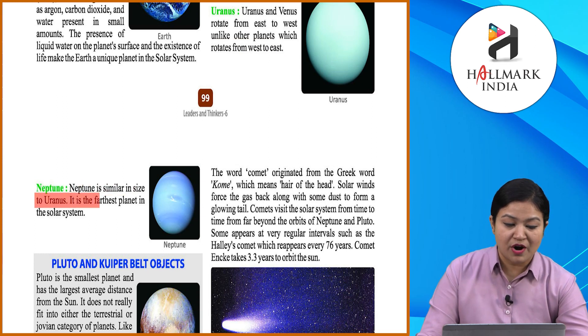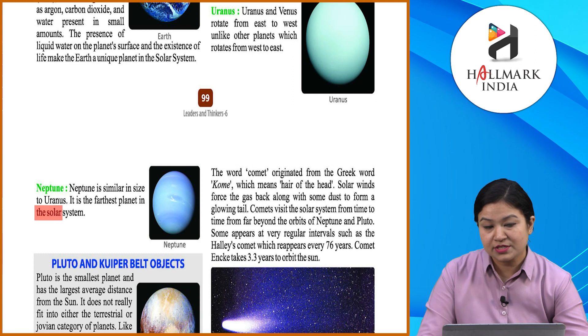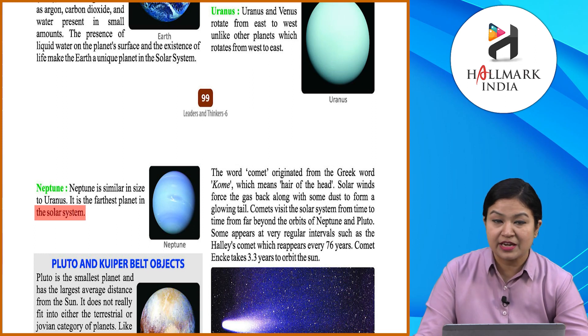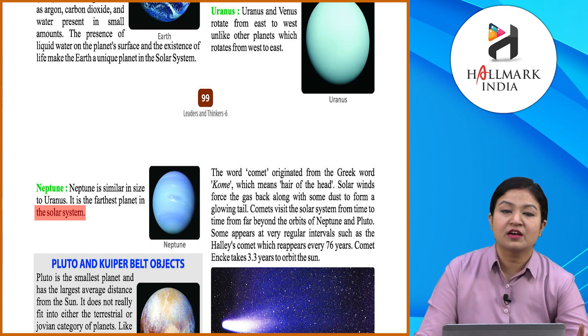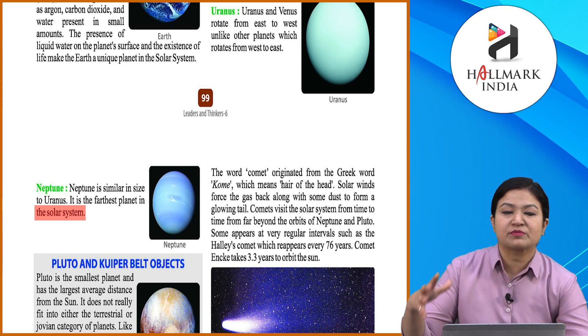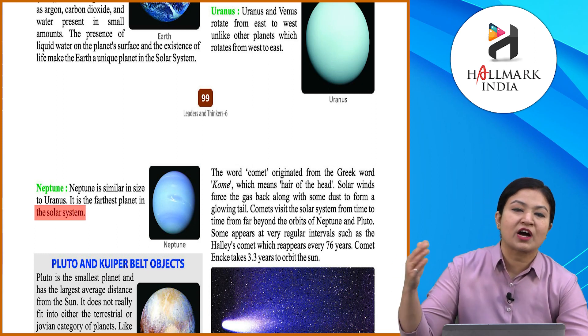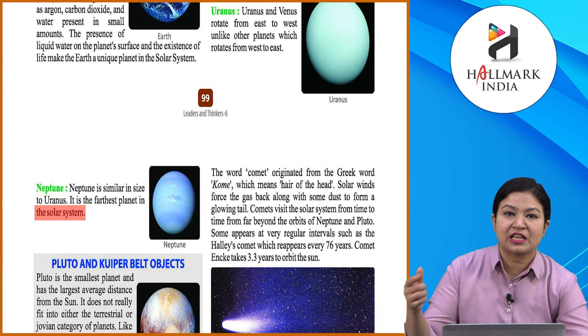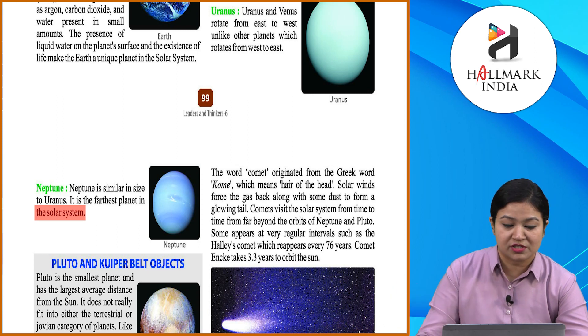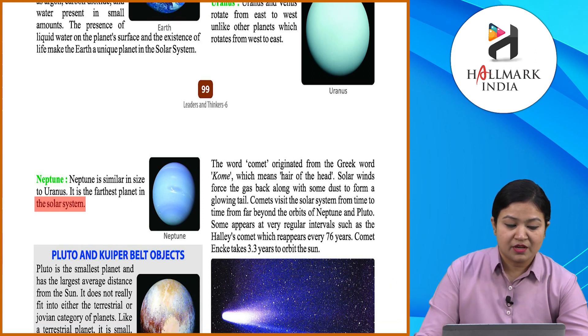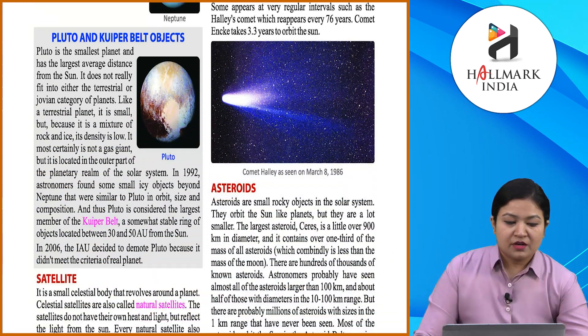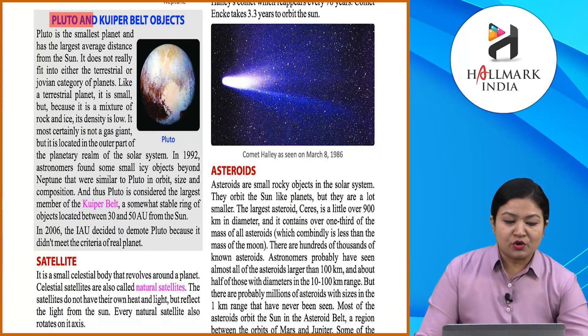Neptune is smaller in size than Uranus and is the farthest planet in the solar system. Neptune is considered the most distant planet in our solar system.